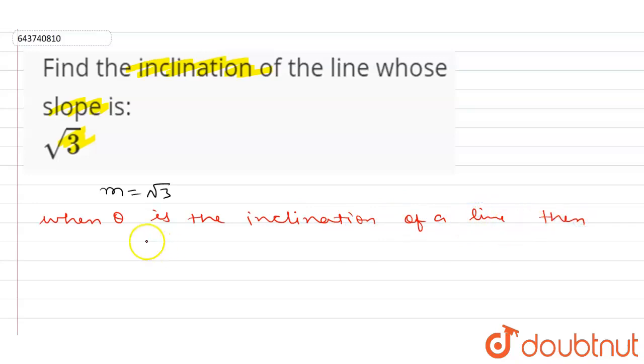So I can write here slope is equals to m is equals to tan θ. And here it is given that m is equals to √3.